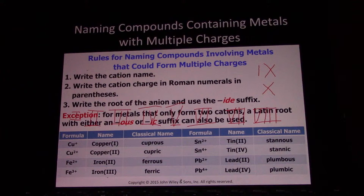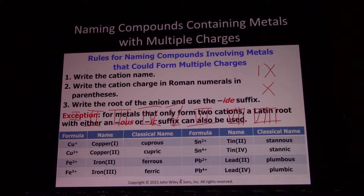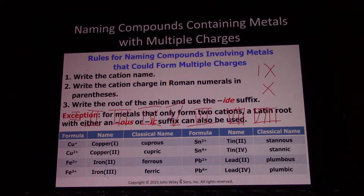There's also the classical system for a couple of the ancient known metals. Copper, iron, tin, and lead only have two possible charge states. In this system, the higher of the two possible charge states gets the IC ending, and the lower possible charge gets the OUS ending. You use the classical stem of the word.